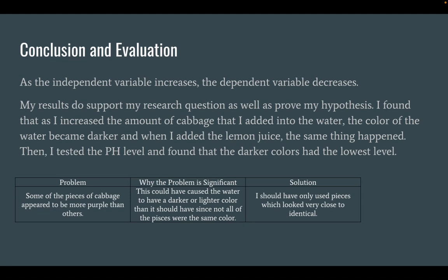Conclusion and evaluation: as the independent variable increases, the dependent variable decreases. My results support my research question and prove my hypothesis. I found that as I increased the amount of cabbage put into the water, the color became darker, and when I added the lemon juice, the same thing happened. I then tested the pH level and found that the darker colors had the lowest level of pH.